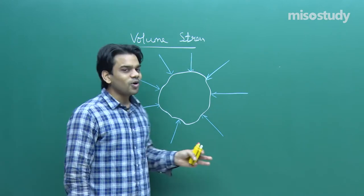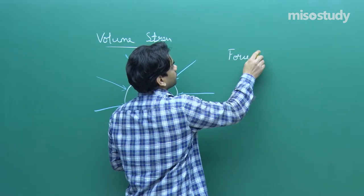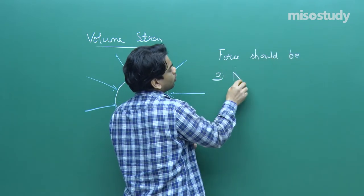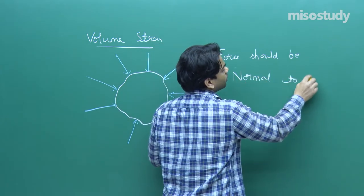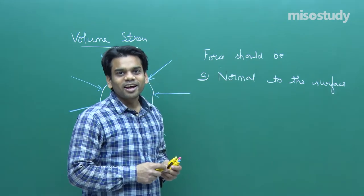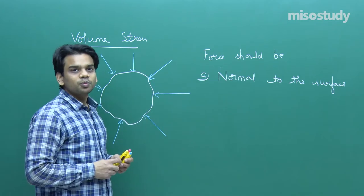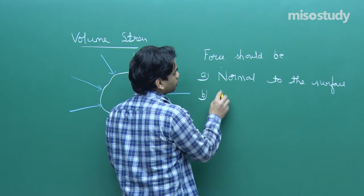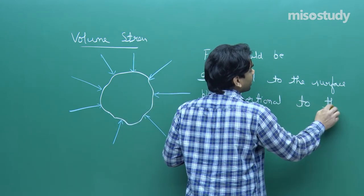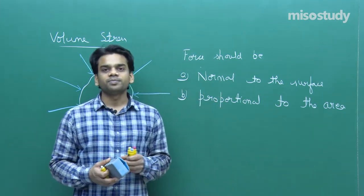The force acting from all directions on the object must satisfy two requirements: first, it has to be normal to the surface at each point; second, it should be proportional to the area at which you are checking. If you are checking a wider area, the force should be of larger magnitude; if a smaller area, the force should be of smaller magnitude. It should be proportional to the area of contact.